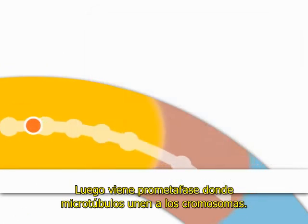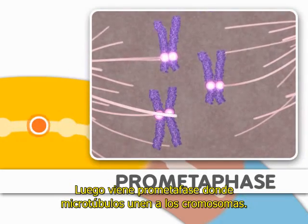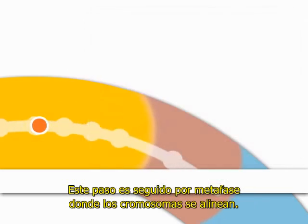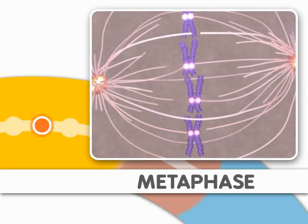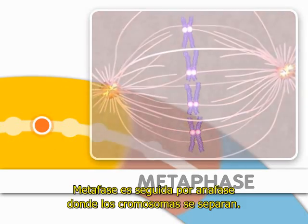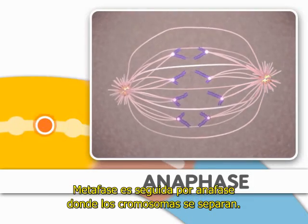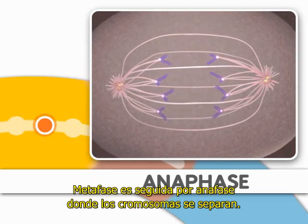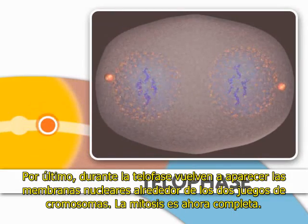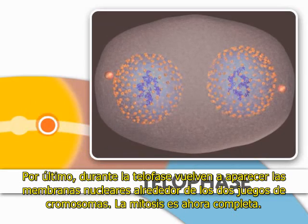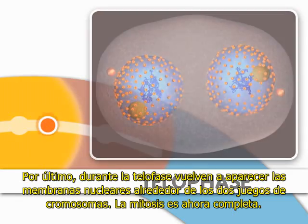Next comes prometaphase, where microtubules attach to the chromosomes. This is followed by metaphase, where the chromosomes align. Metaphase is followed by anaphase, where the chromosomes separate. Finally, during telophase, nuclear membranes reappear around the two sets of chromosomes. Mitosis is now complete.